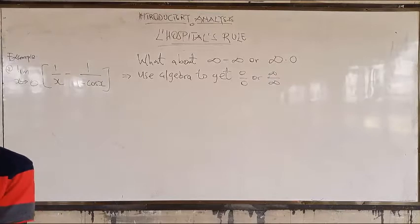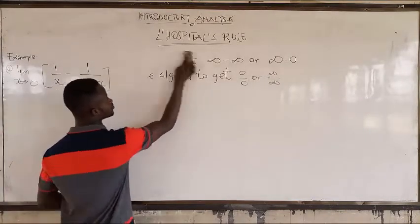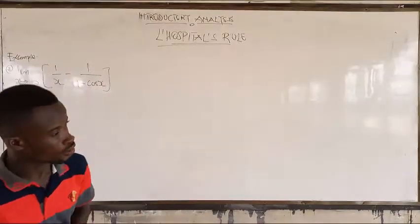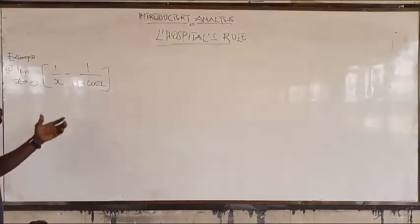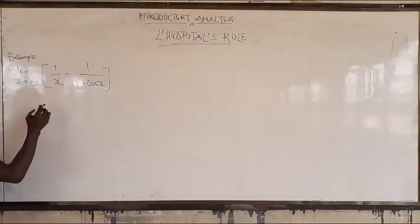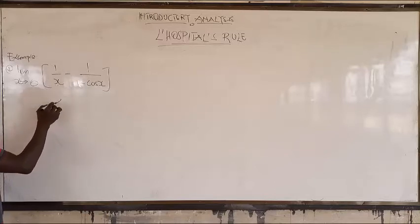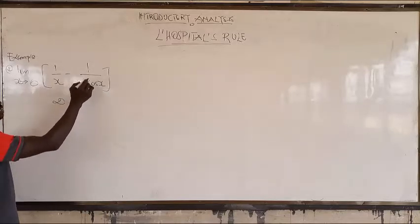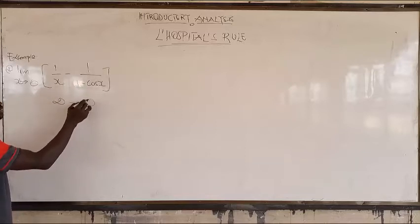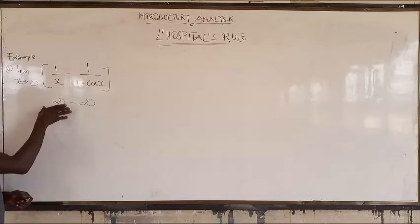So we look at our first question. By substitution, you can see that we get 1 over 0, which is infinity, minus here we get 1, and here we get 1 over 0, which is infinity. So this is infinity minus infinity.